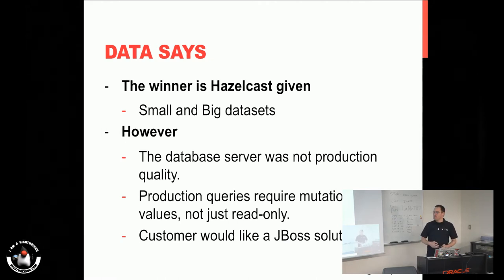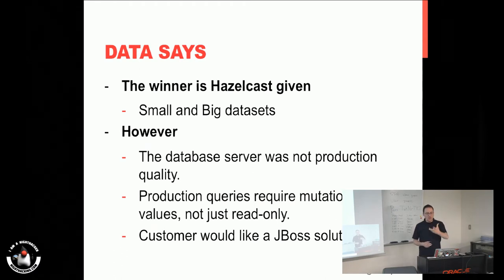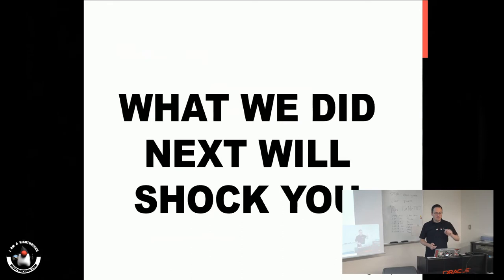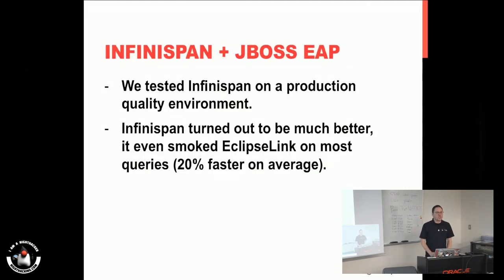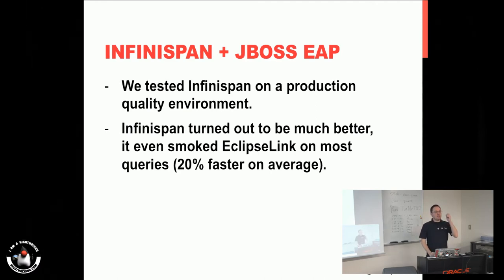Everything was good — the customer was happy because they could turn from EclipseLink to Hibernate and configure the caching. But remember we were using fake data, an in-memory database, and a few other things. So we decided to run this combination in production. Because they wanted everything JBoss-based, they configured Infinispan. Turns out Infinispan was much, much faster — even 20% faster than EclipseLink. That means Infinispan and Hibernate have a really tight integration, and when you run everything within the same provider, you get much better results.